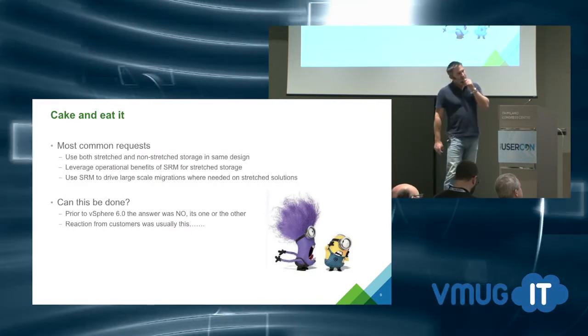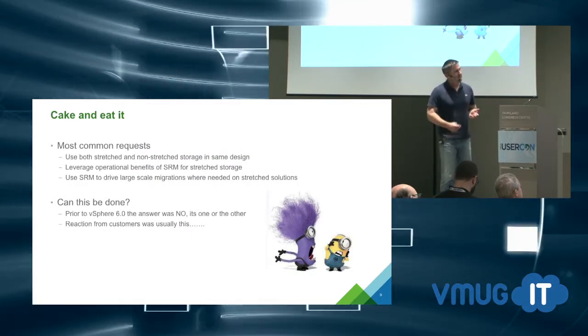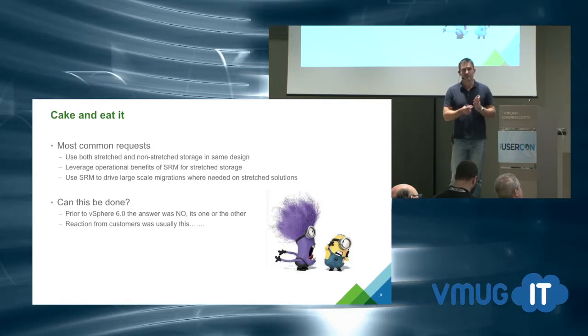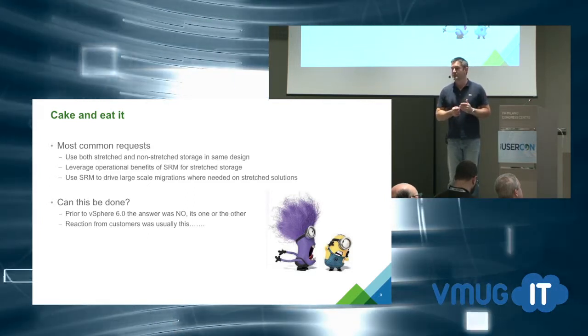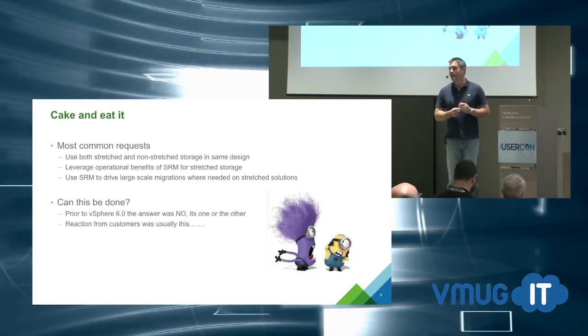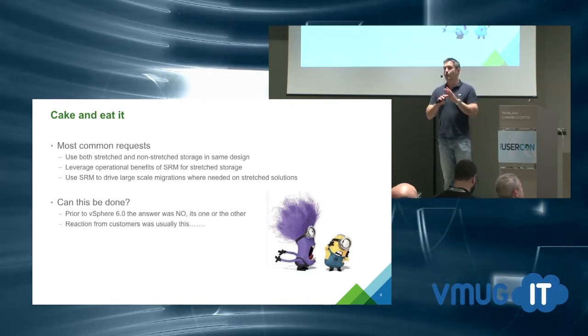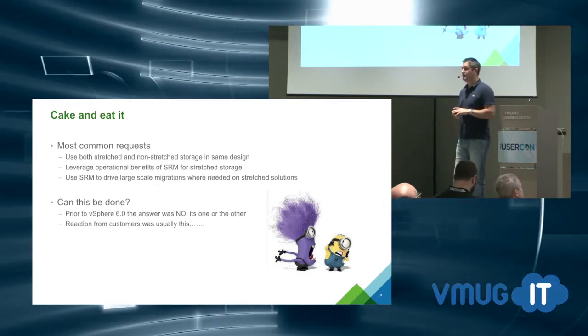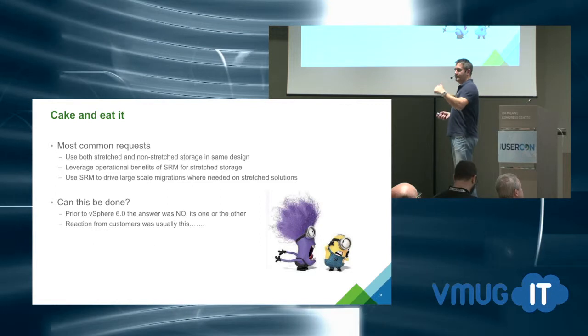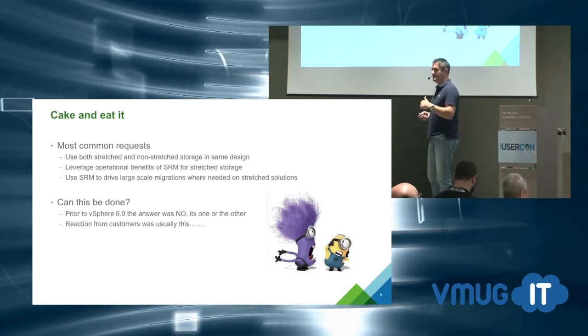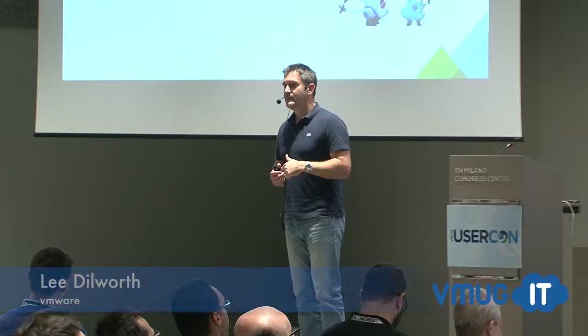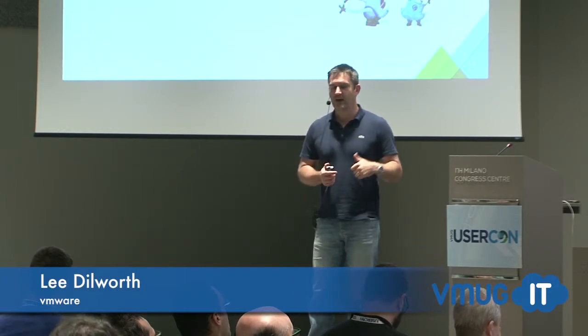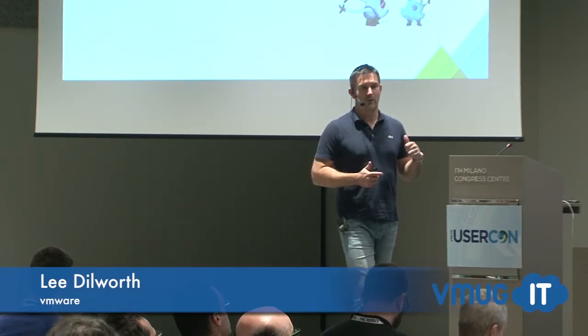Ops teams don't want to keep logging back into SRM every time a new workload appears. They'd say: automate that — when I put a VM in a certain place, just detect which networks it's connected to and make the mapping for me. We can do that now in this version.